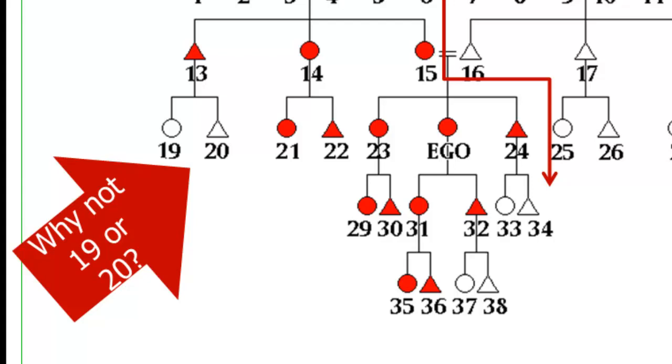Why 19 and 20 are not included in the matrilineage? They're on the mother's side, but they're not matrilineal kin. And again, this has to do with the fact that because it's matrilineal, 13's children will derive their lineage identity from their mother, and that means 19 and 20 belong to their mother's matrilineage and not to Ego's mother's brother, number 13.